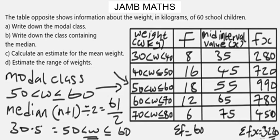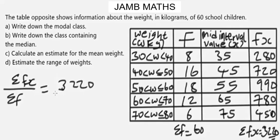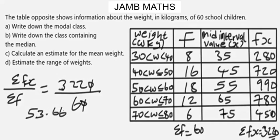Now we can use this to find the mean for this grouped frequency table. Mean weight = sigma(fx) ÷ sigma(f) = 3220 ÷ 60. Dividing 322 by 6 gives approximately 53.67, which to 3 significant figures is 53.7 kg.